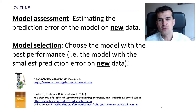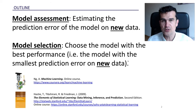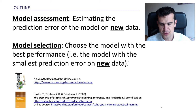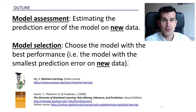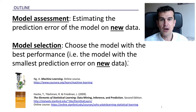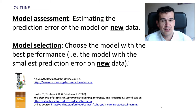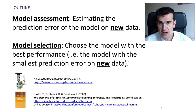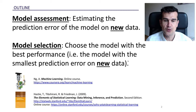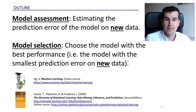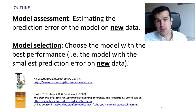What we're going to learn in this unit is how to select the best model. In order to select the best model among all the ones we can choose from, we have to have a way of assessing them — of knowing how good they are. The way we're going to assess them is by estimating how well they do on new data, because that's why we built the model in the first place. Once we know how good each model is at predicting new data, we'll choose the one with the smallest prediction error on new data.